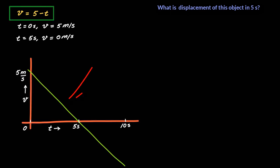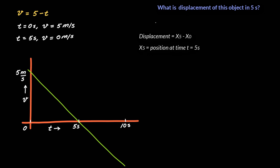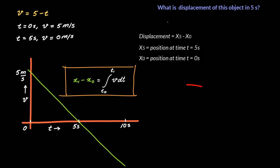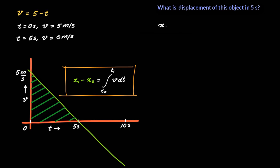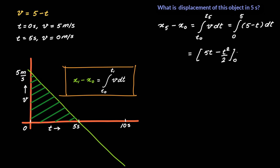This curve turns out to be a straight line. So the displacement can be written as x5 minus x naught, where x5 is the position at time t equal to 5 seconds and x naught is the position at time t equal to 0 seconds. Then using this formula, we do integration between t equal to 0 and 5 seconds, which should be the area under this straight line. What we get is x5 minus x naught equals integral of v dt, limits from 0 to 5, which equals integral of (5 minus t) dt, which equals 5t minus t squared upon 2, with limits from 0 to 5 seconds.